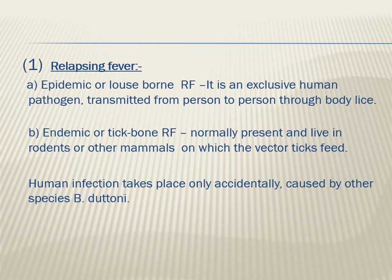Relapsing fever from Borrelia recurrentis occurs in two forms. Epidemic relapsing fever is transmitted by louse, spreading from person to person. Endemic relapsing fever is transmitted by ticks, which feed on rodents and mammals and then transmit the bacteria to humans. In the epidemic louse-borne form, transmission is human to human; in the endemic tick-borne form, animals and rodents are also involved.